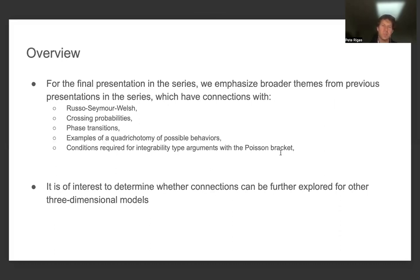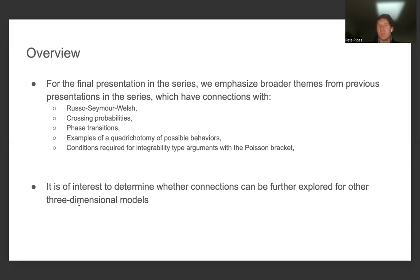The overview for this final presentation in the series is that we emphasize broader themes from previous presentations, which have connections with Russo-Seymour-Walsh crossing probabilities, phase transitions, examples of quadrichotomies of possible behaviors, as well as conditions required for integrability type arguments with the Poisson bracket for a wide variety of dynamical systems and systems defined by probability measures in discrete probability. It is of interest to determine whether connections can be further explored for other three-dimensional models or two-dimensional models, related to different characteristics of the framework from the presentations offered in this series. Thanks for watching.